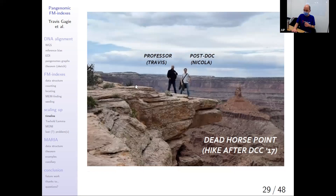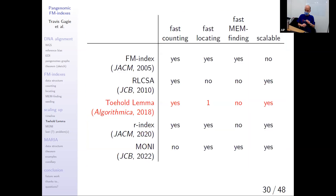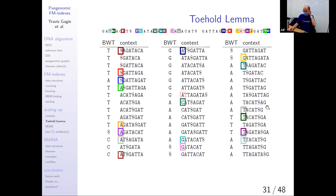About six years ago after DCC 2017, by coincidence, there was a photo of the speaker next to Nicola Prezza. About half an hour after the photo was taken, Nicola told him about something called the toehold lemma. The RLCSA was the thing you could do counting with, and it was scalable, but you couldn't do locating or MEM finding. With the toehold lemma, you could do counting and locate one occurrence of a pattern — it was scalable — but MEM finding was still missing.